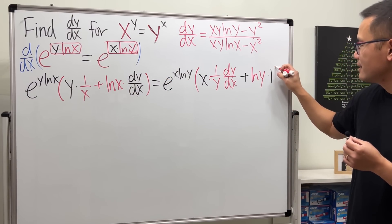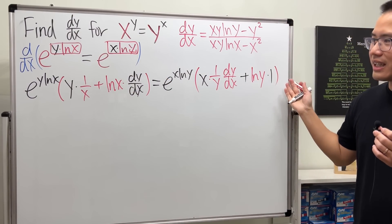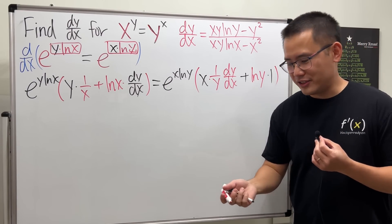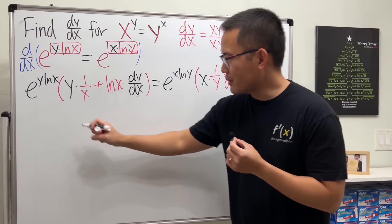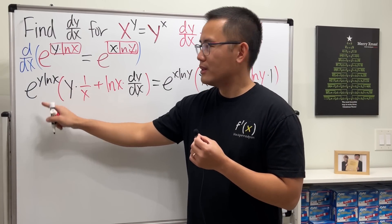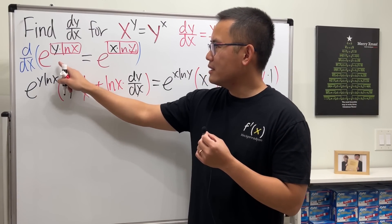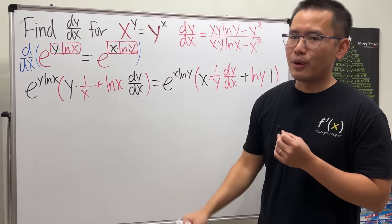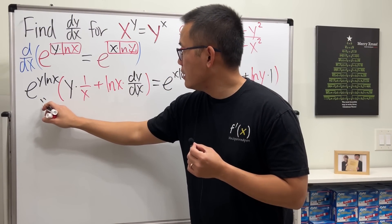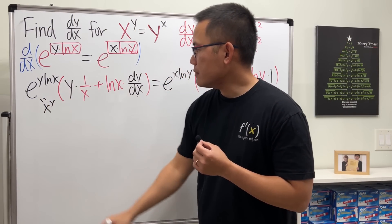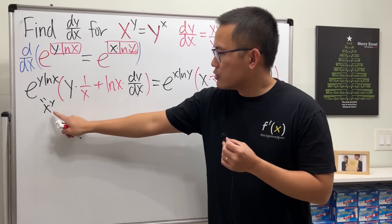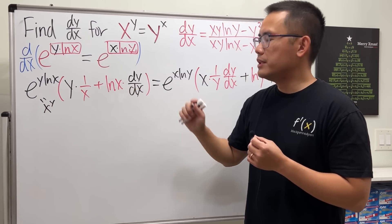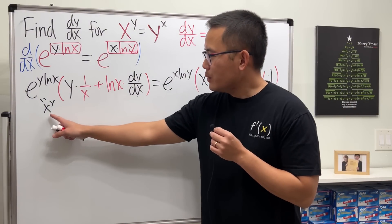Continue: plus the second function, which is ln y, times the derivative of the first, which is 1. Now the rest is simplification. This expression came from e to the y ln x, which is just x to the y. Let me make a note of that.